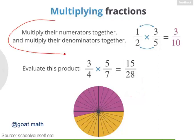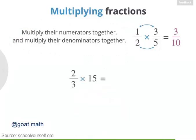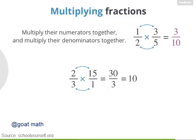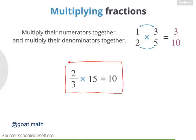In general, you'll probably want to use the multiplication trick rather than splitting up slices, because splitting up slices is a lot of work. If you're multiplying a fraction by a whole number, like 2 thirds times 15, note that 15 is the same as 15 divided by 1, so you can think of this as multiplying two fractions. Multiplying the numerators gives 2 times 15, or 30, and the denominators give 3 times 1, or 3. So this product is 30 divided by 3, which equals 10. So 2 thirds times 15 equals 10.